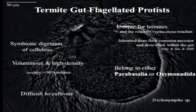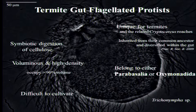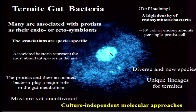These protists are very difficult to cultivate in vitro or in laboratories. When we look at the protist cells after DAPI DNA staining, we can find a high density of endosymbiotic bacteria within the protist cells. Sometimes they amount to up to 10^5 cells of endosymbionts per single protist cell.